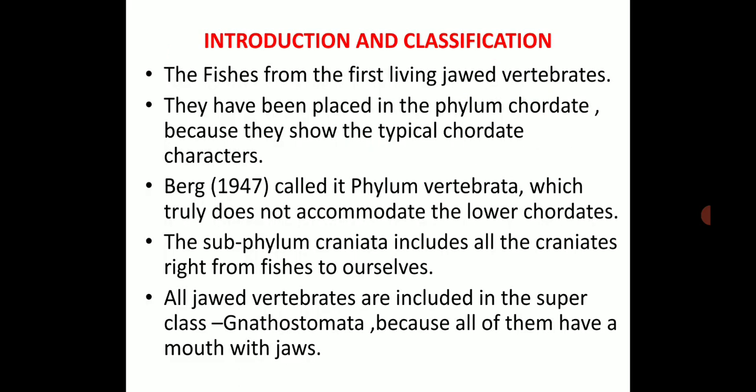Next is the introduction and classification. Fish are the first living jaw vertebrates — meaning they have a mouth with jaws. They have been placed in Phylum Chordata because they show typical chordate characters. The scientist Berg, in 1947, called it Phylum Vertebrata, which truly does not accommodate the lower chordates. Berg classified the Phylum Vertebrata and included these fish in the chordate phylum.